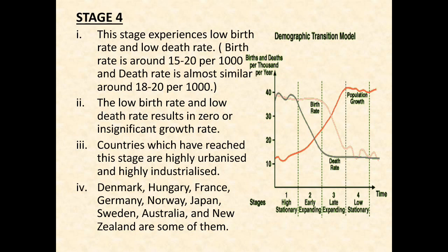Countries which have reached this stage are highly urbanized and highly industrialized. These are countries like Denmark, Hungary, France, Germany, Norway, Japan, Sweden, Australia and New Zealand. These are the countries in Stage 4 of the demographic transition model.